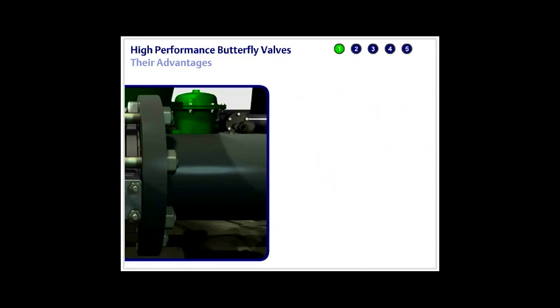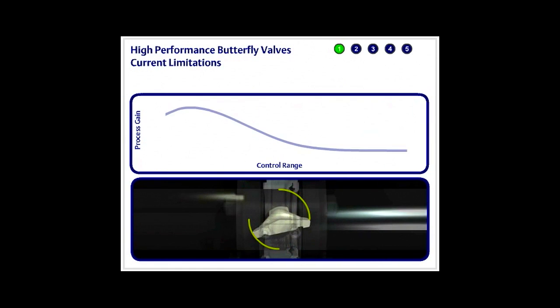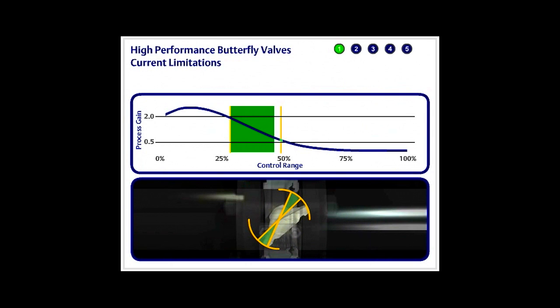However, the majority of industrial applications involve fast processes and varying pressure drops, situations in which the butterfly valve performs poorly. This lack of control can also be seen at both low and high flow rates, which means the butterfly valve's effective control range realistically occurs between 30% and 50% open.